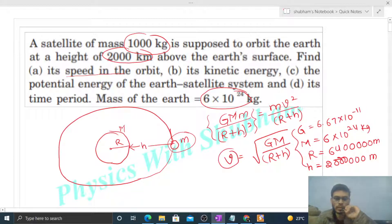Its kinetic energy is simply half of m times v squared. Mass of the satellite is given, that is 1000 kilogram, and speed we calculated in the first part. We can put that value here.